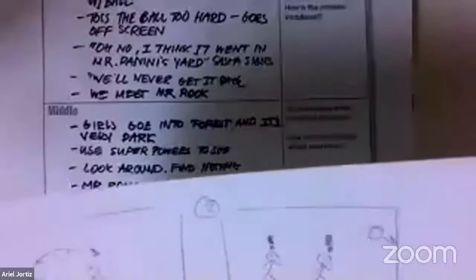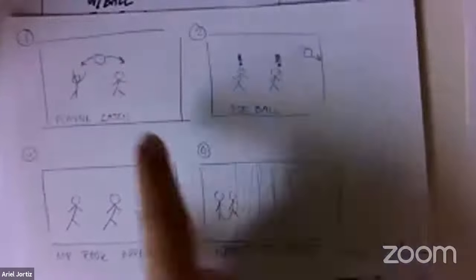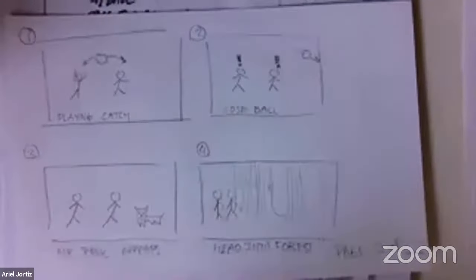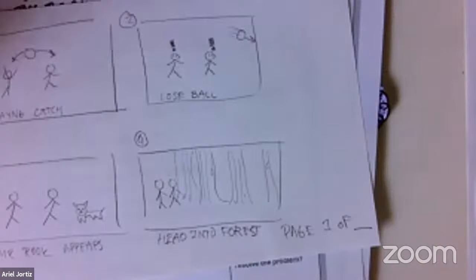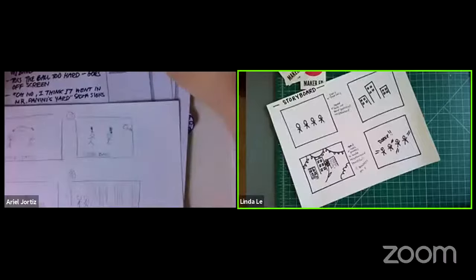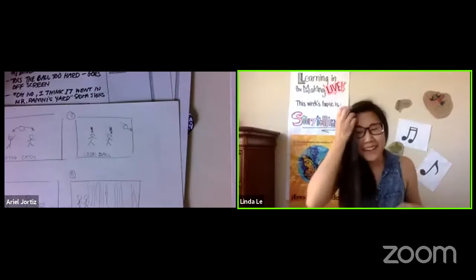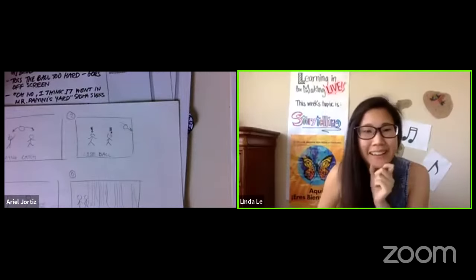I actually made a storyboard myself — it's not as concise, but this is one page. They're playing catch using stick figures, because stick figures are a great way to quickly jot out an idea — the first draft's job is only to exist. Then they lose the ball, Mr. Rook appears, and then they head into the forest. This is page one of however many — there could be up to 30. Some films have more than 200 pages worth of storyboards, so don't feel bad if you have too many!